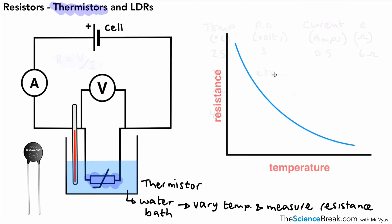Now, if we got a bunch of data and drew a graph of our results, we would see that as we raise the temperature, the resistance decreases.